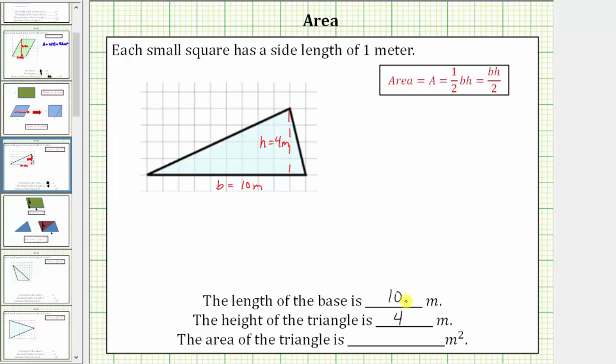And now we need to determine the area of the triangle, which is the number of square meters that will fit inside the triangle. The area formula for a triangle is area equals one-half base times height, or we can say base times height divided by 2.